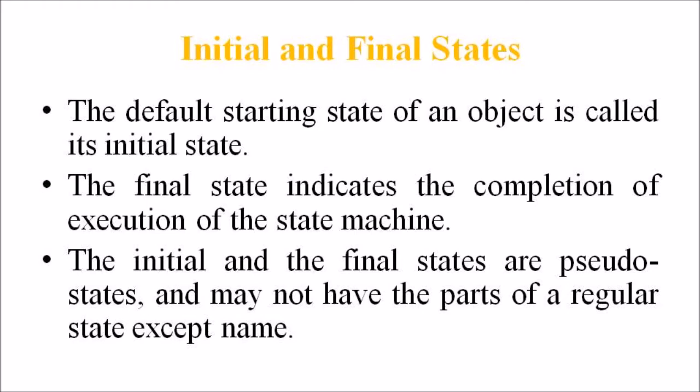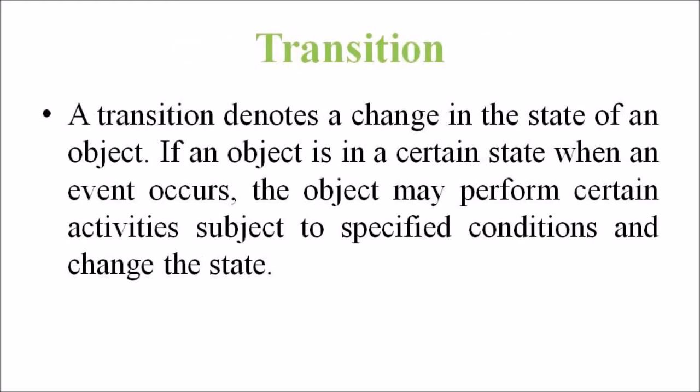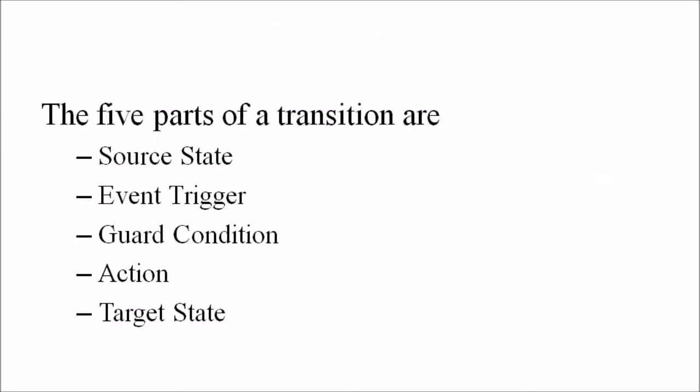A transition denotes a change in the state of an object. If an object is in a certain state when an event occurs, the object may perform certain activities subject to specified conditions and change the state — a state transition is said to have occurred. The transition gives the relationship between the first state and the new state. A transition is graphically represented by a solid directed arc from the source state to the destination state. There are five parts of a transition.